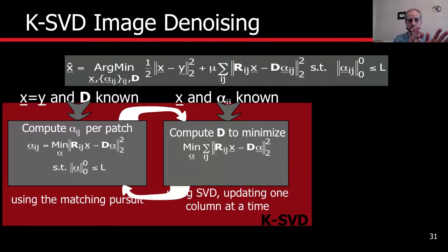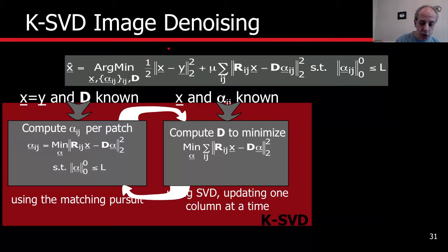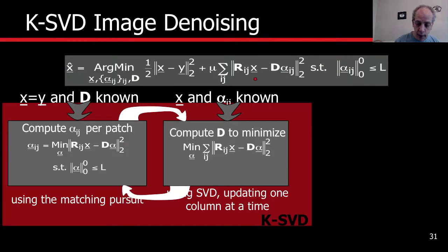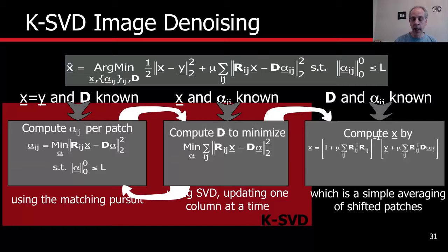You are encoding every patch with sparse coding. When you finish, you update the dictionary. You encode again, you update the dictionary. When you're done with the dictionary, all that's left is to compute X. You don't touch the code or the dictionary anymore, and you basically solve for the problem when D and alpha are already fixed.